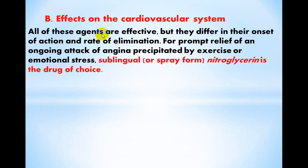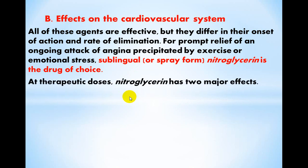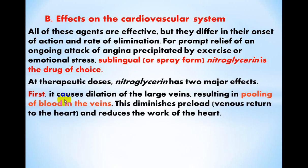All of these agents are effective but they differ in their onset of action and rate of elimination. For prompt relief of an ongoing attack of angina precipitated by exercise or emotional stress, sublingual or spray form of nitroglycerin is the drug of choice. After therapeutic doses, nitroglycerin has two major effects: first, it causes dilation of the large veins, resulting in pooling of blood in the veins, which reduces the work of the heart by diminishing the preload — meaning venous return to the heart.